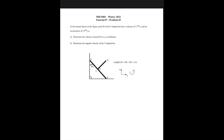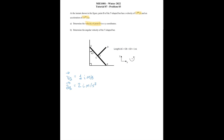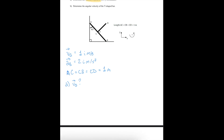Now for our last problem. At the instance shown, point B of the T-shaped bar has a velocity of 1 m/s in the i direction and an acceleration of 2 m/s² also in the i direction. Determine the velocity of point D in the x-y coordinates. Known values: V_B = 1i m/s, a_B = 2i m/s², and AC = CB = CD = 1 meter. For Part A, we want the velocity of point D.